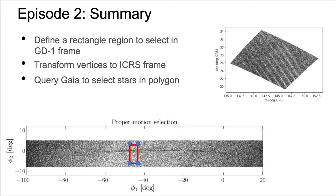In episode two, we start trying to identify stars in GD1 by defining a rectangle around a small part of the stream. We don't have many filters in place, and so too many results would be returned if we queried the full physical size. Here, we prototype on a small portion of the data and then expand out our analysis once we've identified a few more ways to refine our data set.